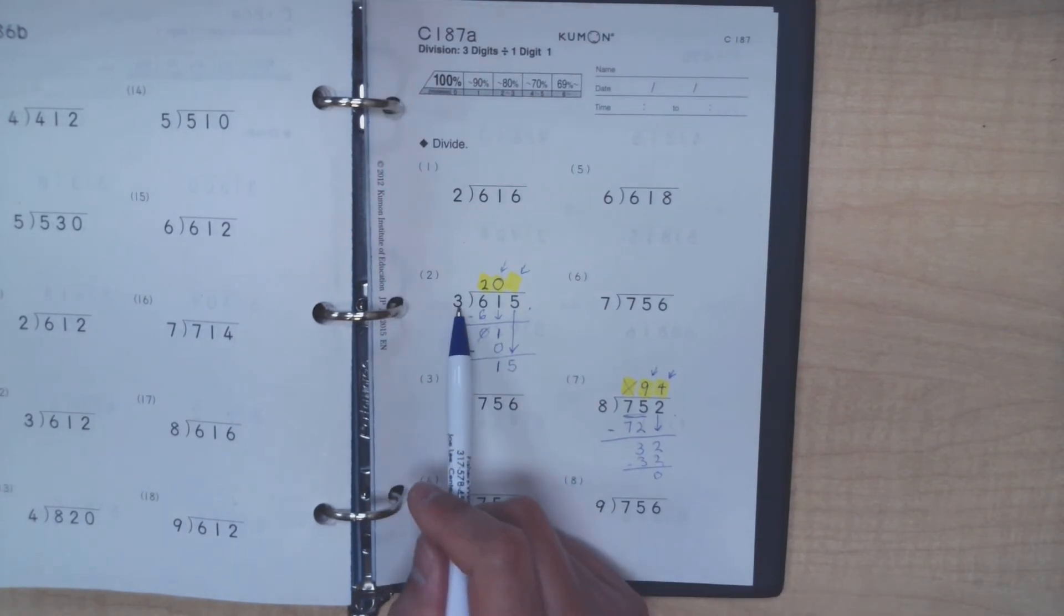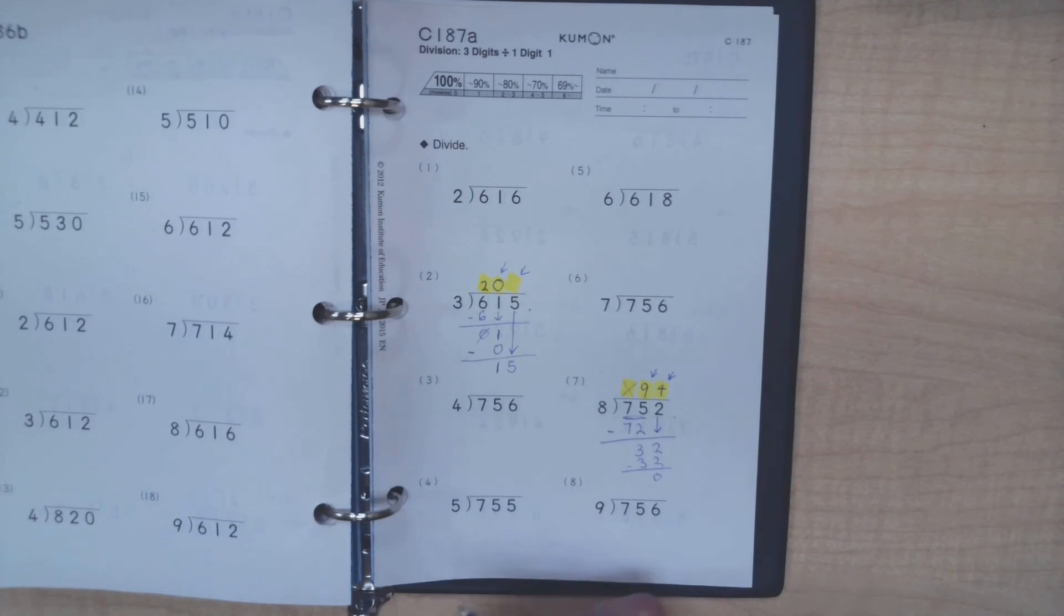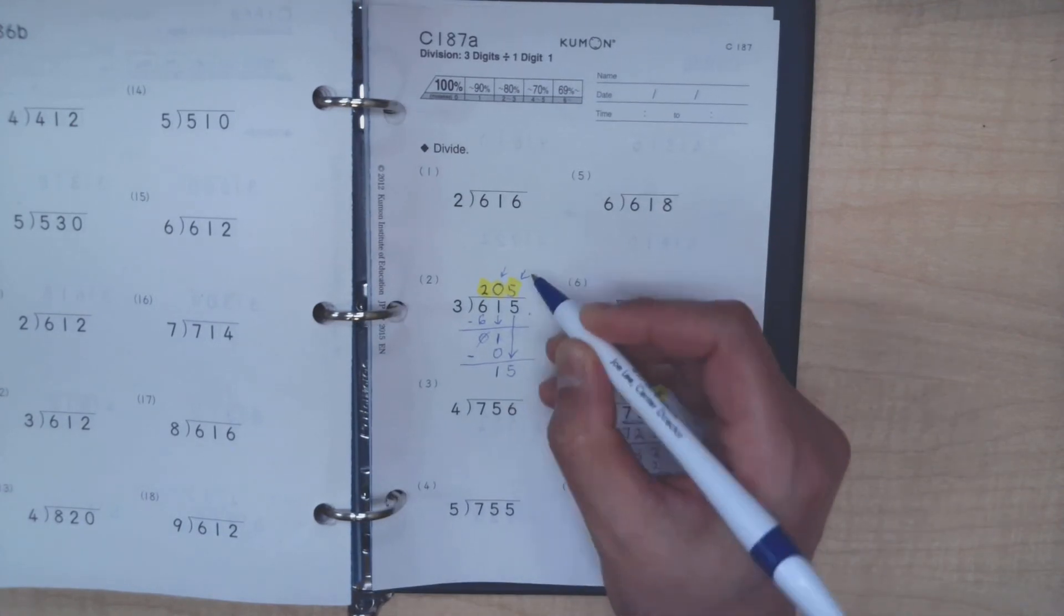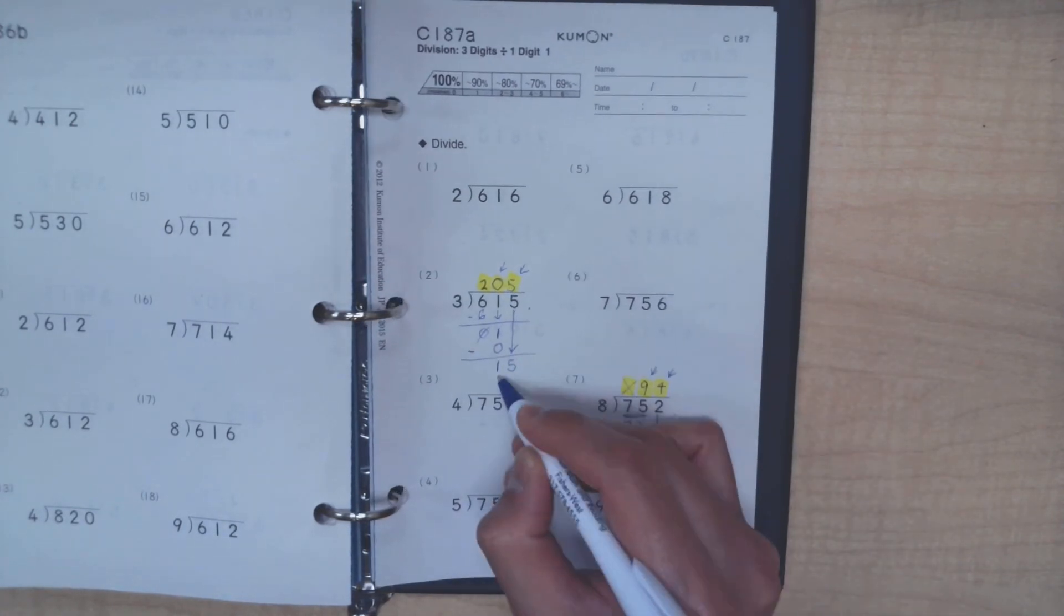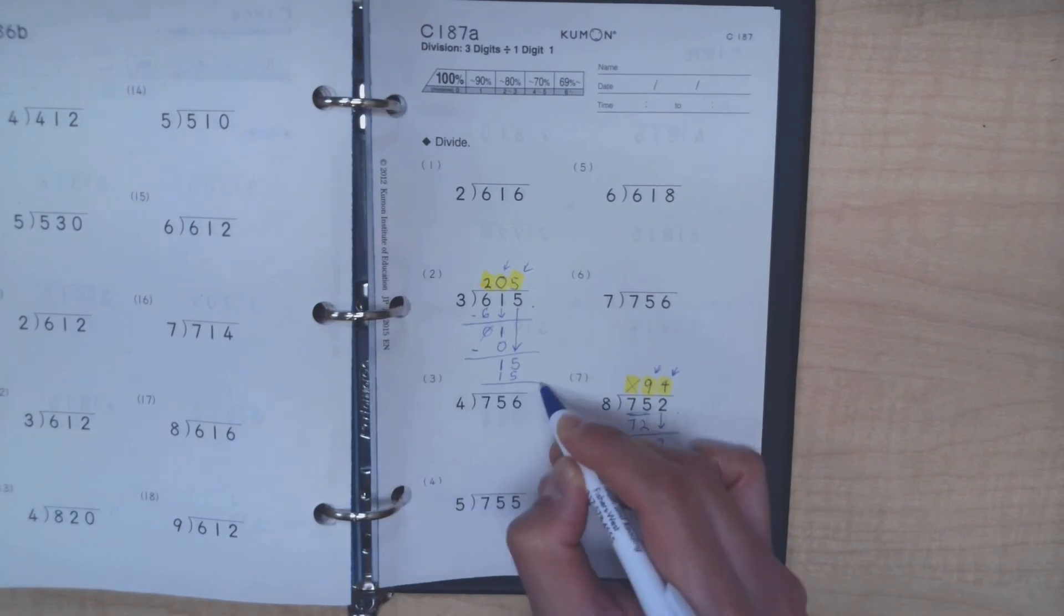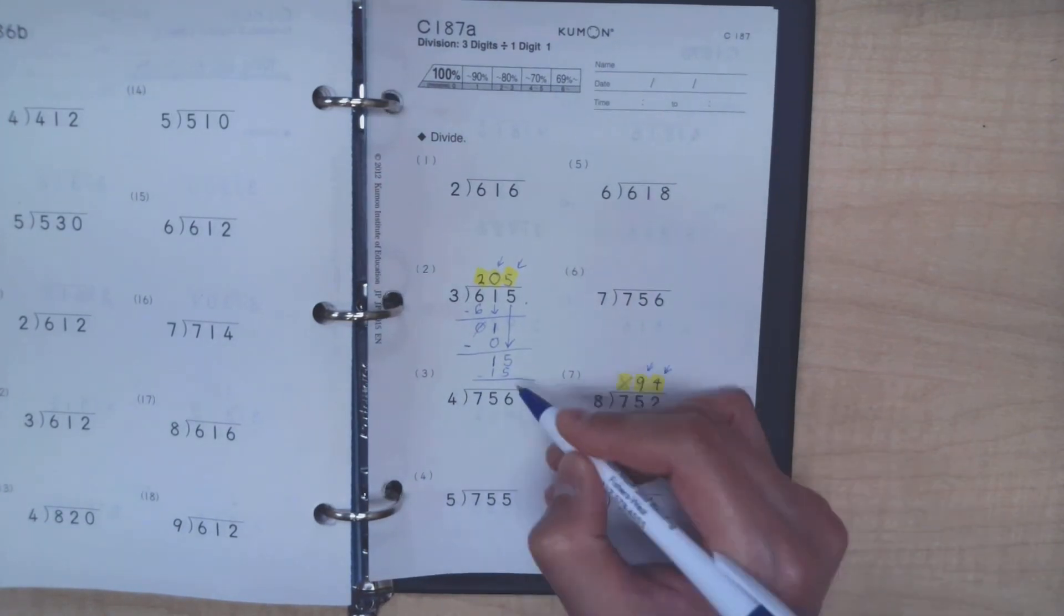Or how many times can this 3 go into the 15? We know it's 5, because 3 times 5 is 15. When we proceed with the subtraction, we get a 0.